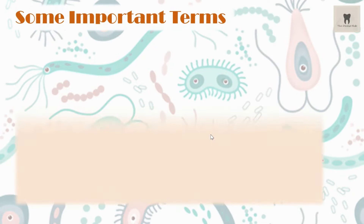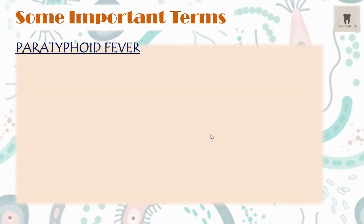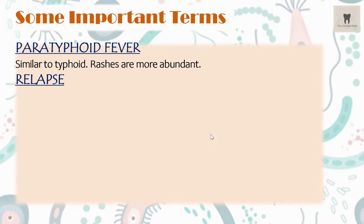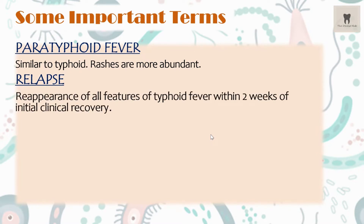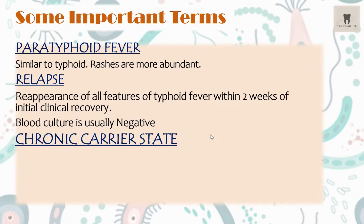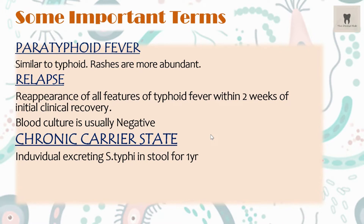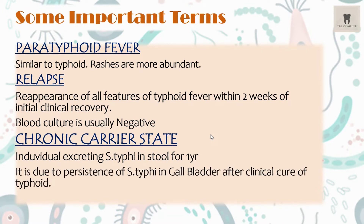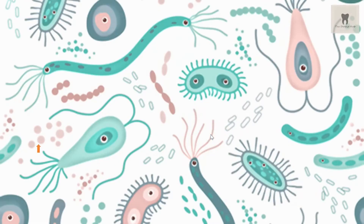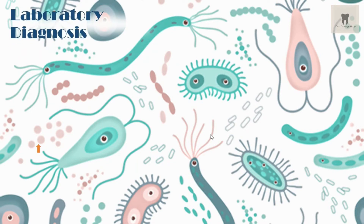Some important terms related to typhoid fever: Paratyphoid fever is similar to typhoid but with more abundant rashes. Relapse is the reappearance of all features of typhoid fever within two weeks of initial recovery — blood culture is usually negative during relapse. Chronic carrier state refers to individuals excreting Salmonella typhi in stool for one year, due to persistence of Salmonella typhi in the gallbladder after clinical cure of typhoid. Coming to the laboratory diagnosis of Salmonella typhi.